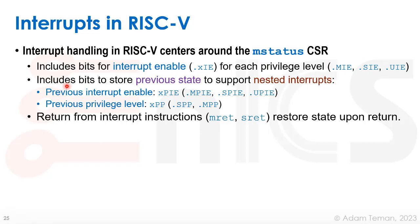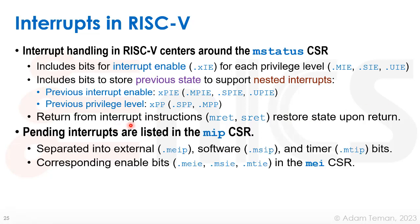mstatus also includes bits to store the previous state to support nested interrupts. If we're handling an interrupt and another arrives, we need to know the previous state — whether interrupts were enabled or disabled, and the previous privilege level. These are stored in the xPIE and xPP bits inside mstatus: .mPIE, .sPIE, .uPIE for previous interrupt enable, and for previous privilege level we have supervisor and machine mode bits. Return-from-interrupt instructions mret and sret restore state upon returning. Pending interrupts are listed in the mip CSR, separated into external, software, and timer categories.